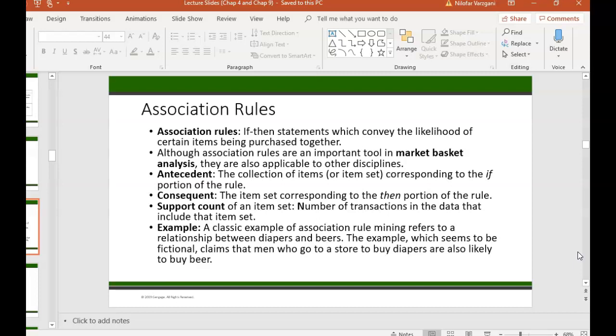Association rules help you come up with if-then statements that are going to tell you the likelihood of certain items being purchased together. Now this has plenty of applications in the supermarket business or even in the grocery store business.